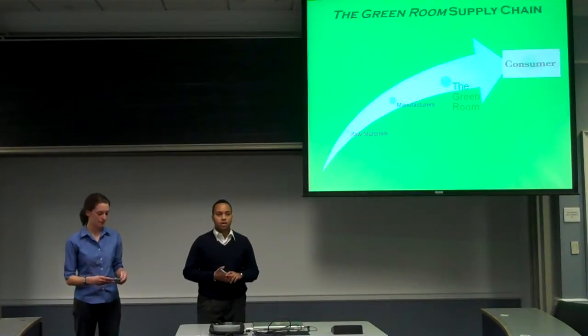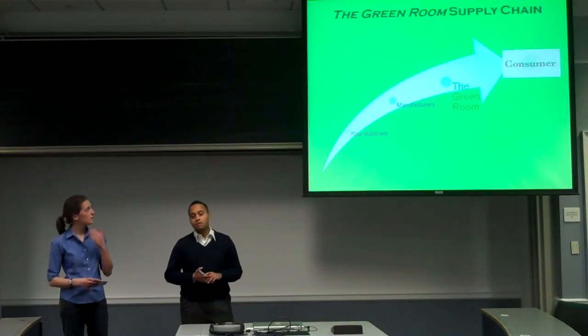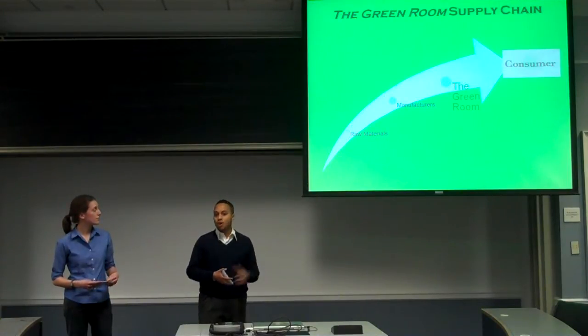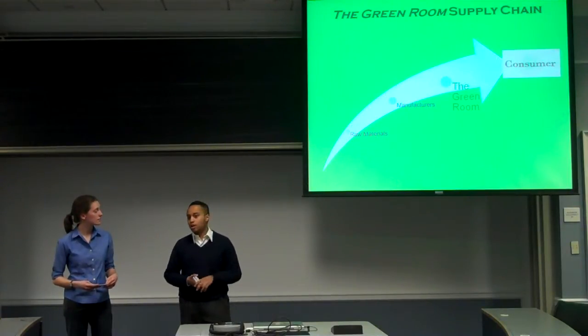And when we look through the supply chain, the supply chain starts with raw materials moving to the manufacturers to turn those into beautiful furnishings that we're going to be displaying through our store in the green room and selling directly to our customers.